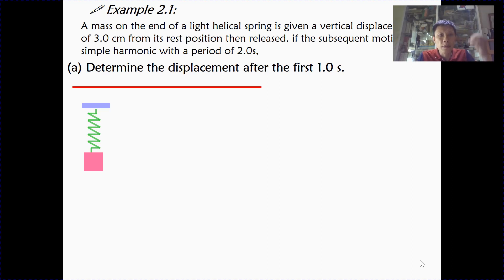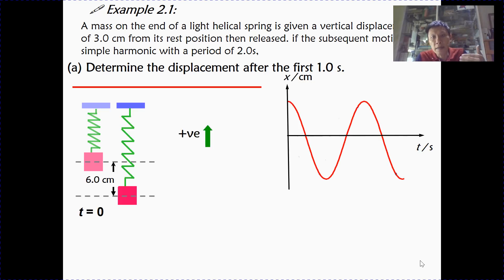So 1 second is half of the period of 2 seconds. So starting from the amplitude position, then you can deduce that after half a period, the displacement will be at the opposite end of the other extreme position. So if you use sign convention, if I take upwards to be positive, then initial displacement is 3 cm. Then after 1 second, half a period later, the displacement will be negative 3 cm.